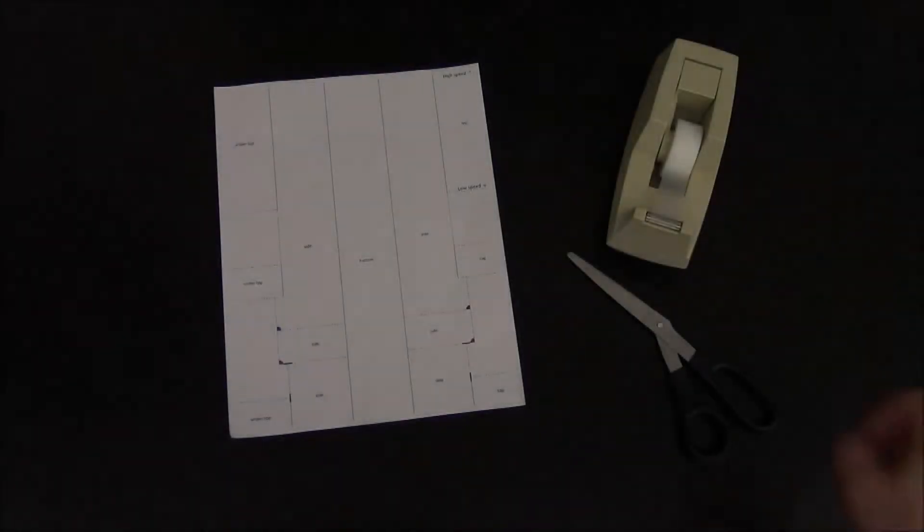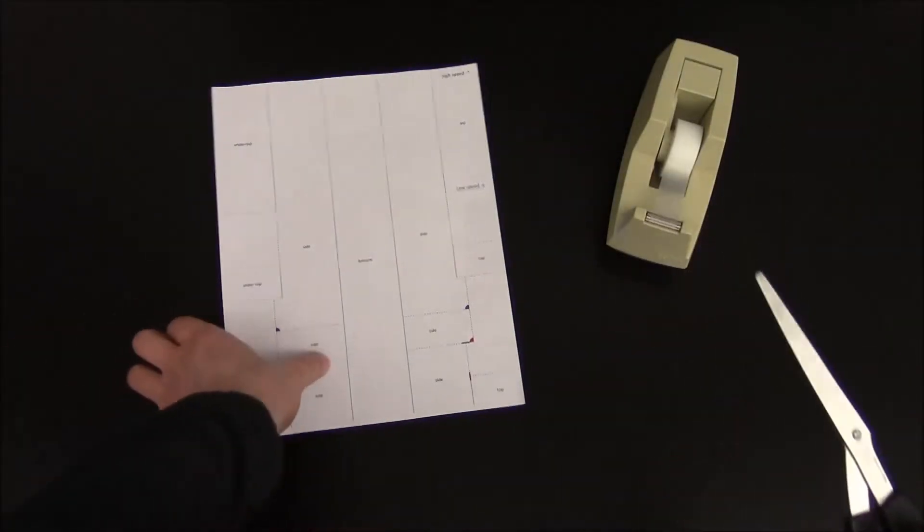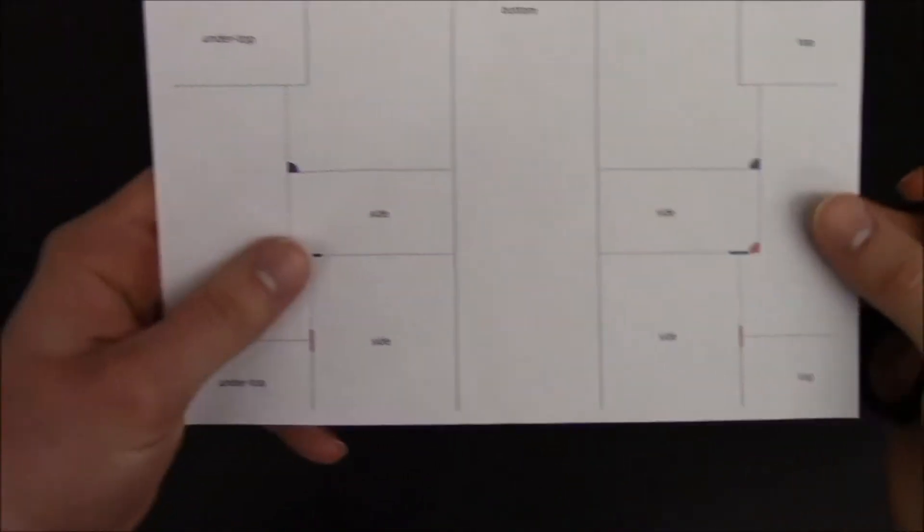Welcome to the Velocity Detector instructor video. Let's start by taking a look at our printout. You'll see that there's dashed lines and solid lines on the page.